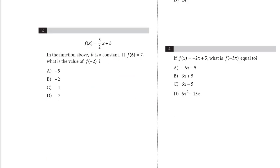Number two, f of x equals three halves x plus b. In the function b is a constant. If f of six equals seven, so f of six equals seven, which equals three halves, plugging in x equals six plus b, we can solve for b.